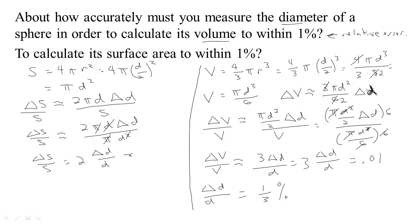So if you want the relative error in S to turn out to be 1%, then the relative error in d needs to be half of that, so that would be 0.05 or half of a percent.